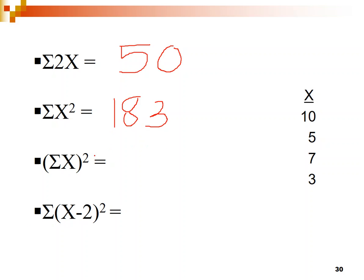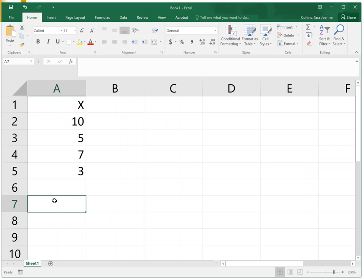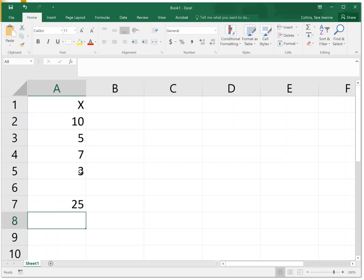The next example is parenthesis-sigma-X, with the squared outside of it: (σX)². This looks really similar to the last one, but it's quite different in how you solve it. You'll notice that sigma X is contained within parentheses. Remember, anytime we have parentheses, we take care of what's inside them first, essentially ignoring the rest of the equation. So here, sigma X is inside the parentheses, meaning we just add together all of those X values — taking the sum of the data set first.